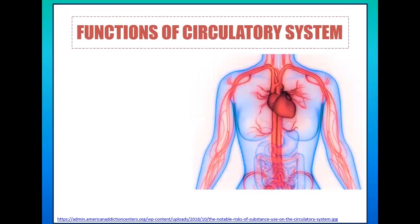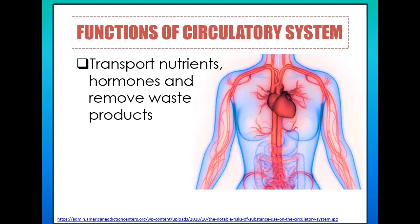For humans, the type of circulatory system is the closed circulatory system. Now the question is: what are the functions of this system — the human circulatory system? One function is to transport nutrients and hormones and to remove waste products. In general, the human circulatory system is known to be a transporting system.